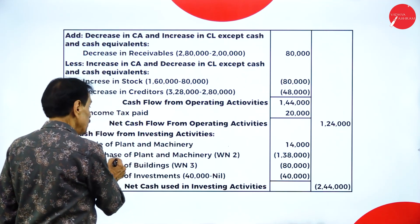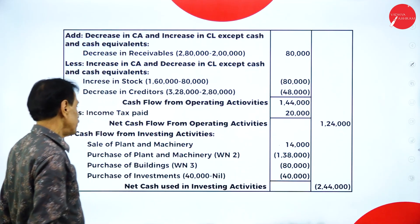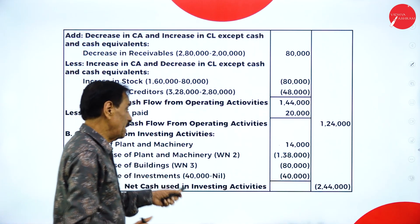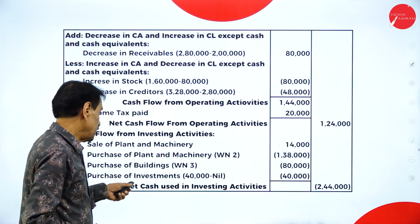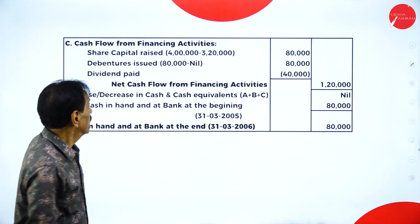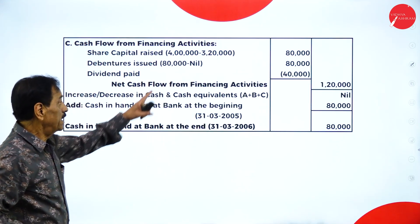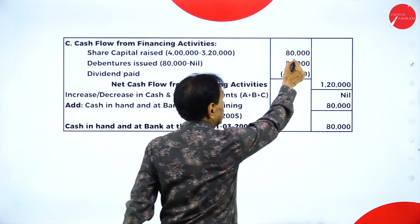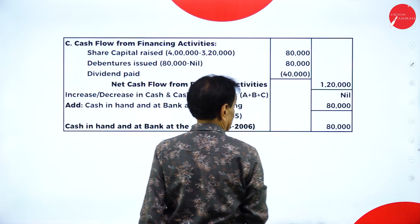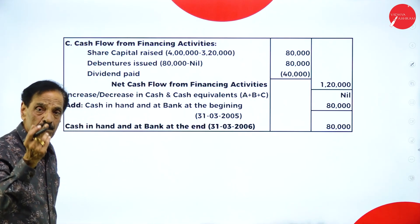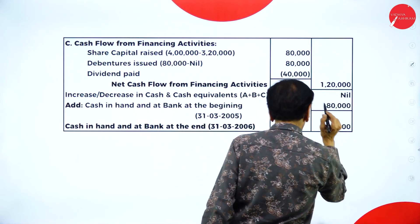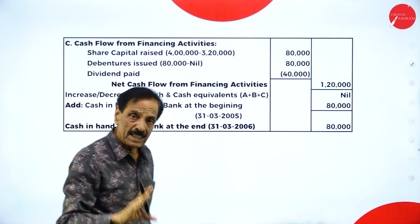Cash flow from investing activity: sale of machinery 14,000 inflow; purchase of machinery 1 lakh 38,000 outflow; purchase of building 80,000 outflow; purchase of investment 40,000 outflow — net cash flow from investing activity is negative 2 lakh 44,000. Cash flow from financial activity: share capital difference 80,000; debenture 80,000; dividend paid nil — net 1 lakh 20,000. Adding all three activities gives nil; add opening balance 80,000 — closing balance is also 80,000.